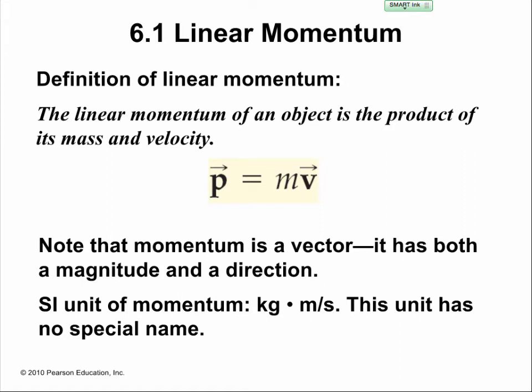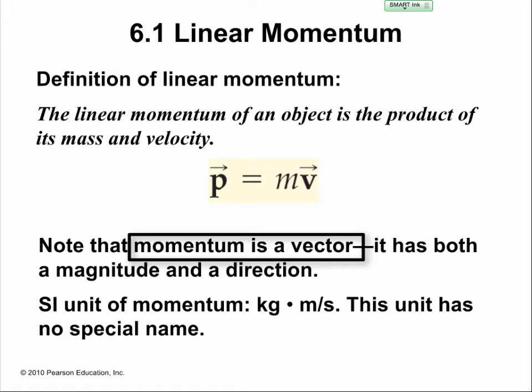For 6.1, we're going to talk about linear momentum. The definition of linear momentum of an object is a product of the mass times its velocity. This is a quantity we measure by multiplying the mass of an object by the velocity. Because velocity is a vector, momentum is also a vector, which means it has a magnitude and a direction.